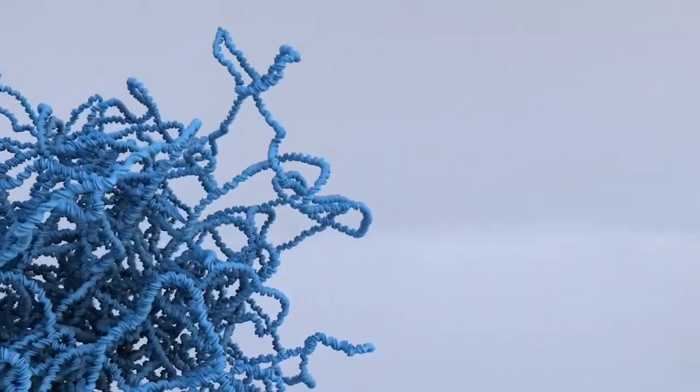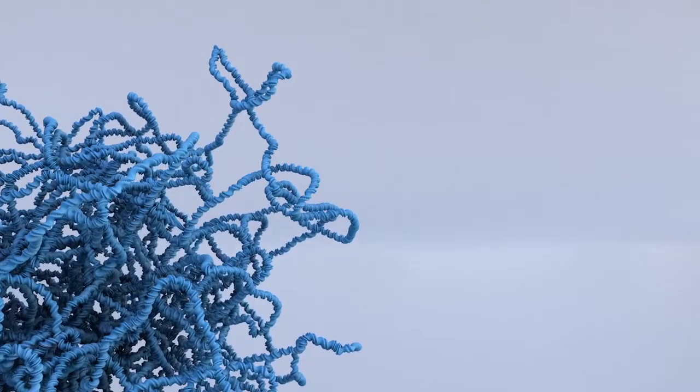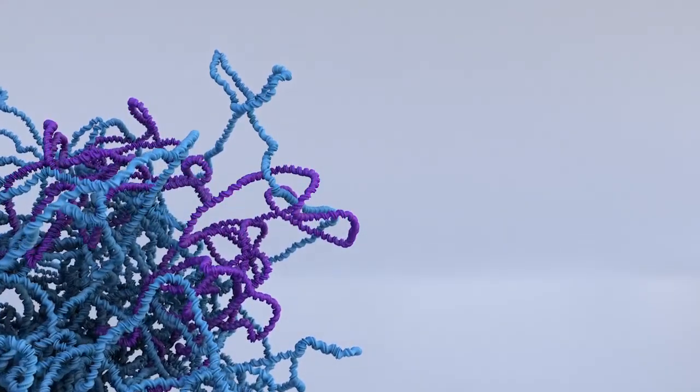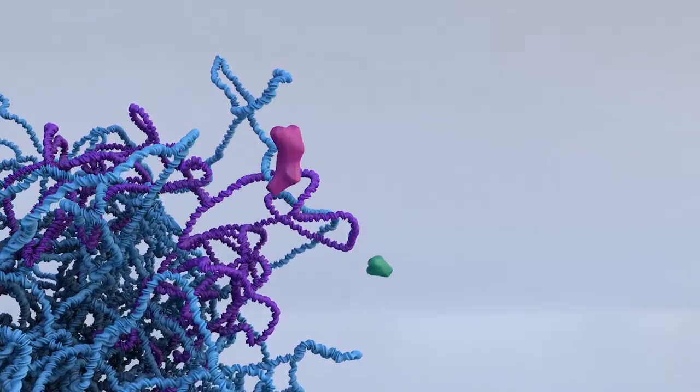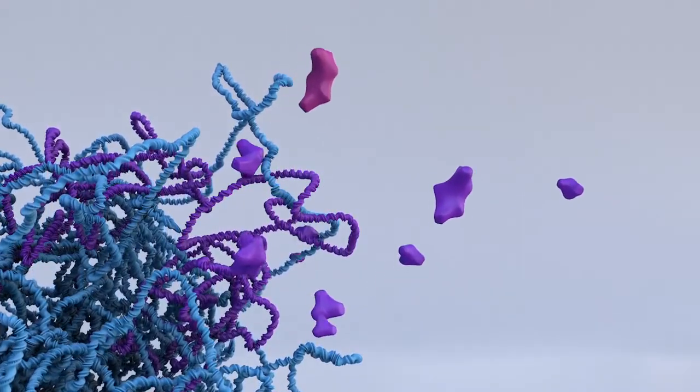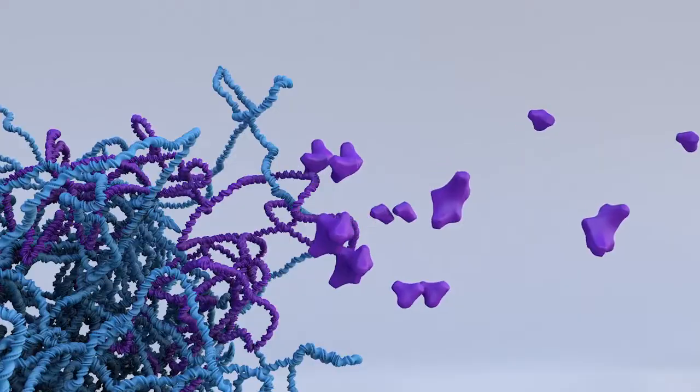When variations occur in areas of the genome that code for proteins, they often have consequences. These changes can affect the protein product itself, or they can affect when, where, or how much protein is made.